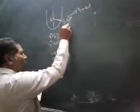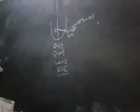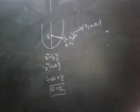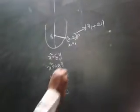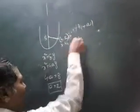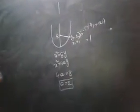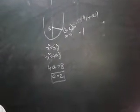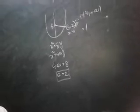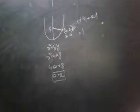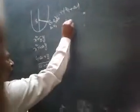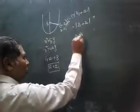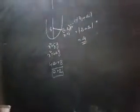Given point P is (4, 2). Therefore, the focal distance equals modulus of y1 plus a. Here y1 equals 2 and a equals 2, so the focal distance is 4.